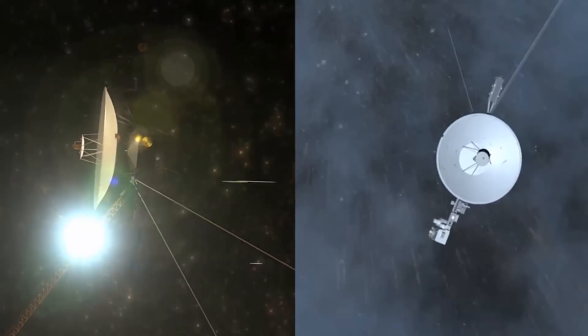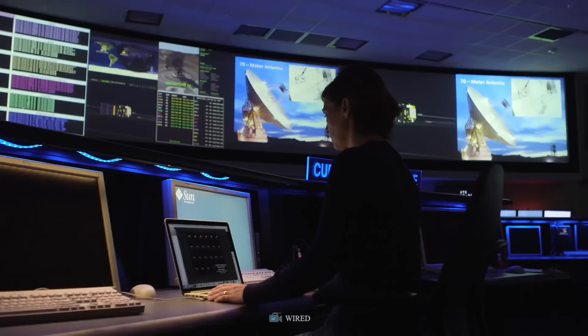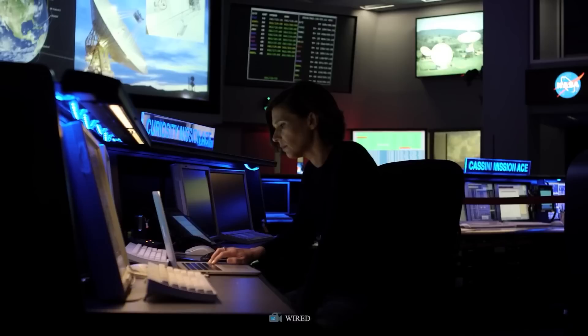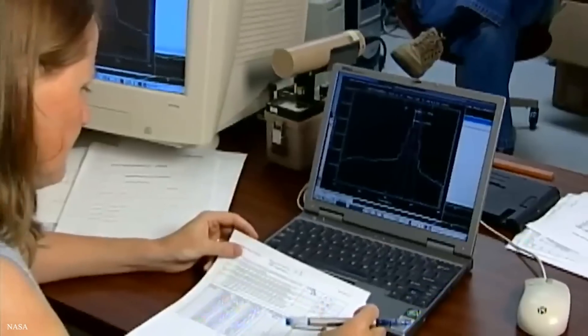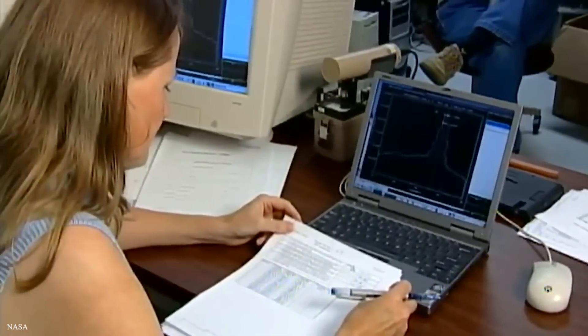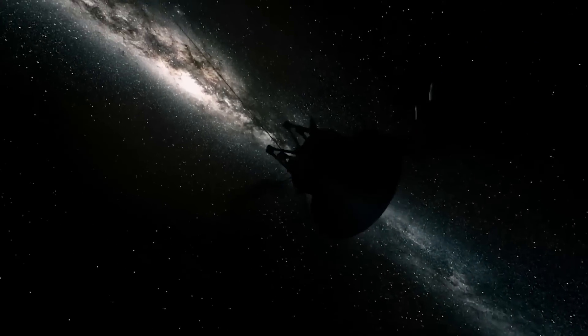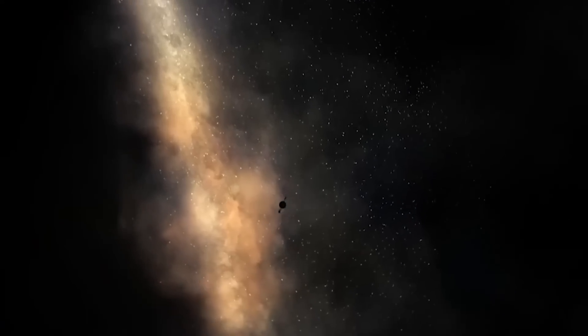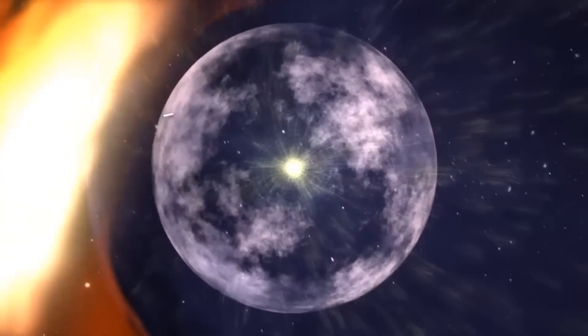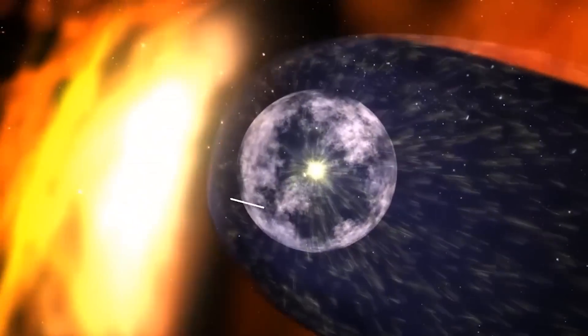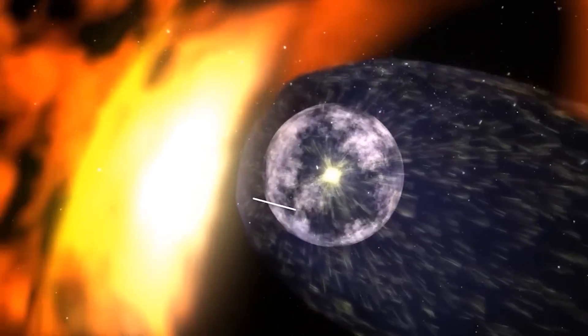Voyager 1, being the first of the twin spacecraft to reach this momentous milestone, provided humanity with its initial glimpse into the uncharted territories beyond the heliopause. It shed light on the mysterious transition from the Sun's domain to the vastness of deep space. In November 2018, Voyager 2 followed suit, crossing the heliopause and venturing into interstellar space, making yet another historic achievement.